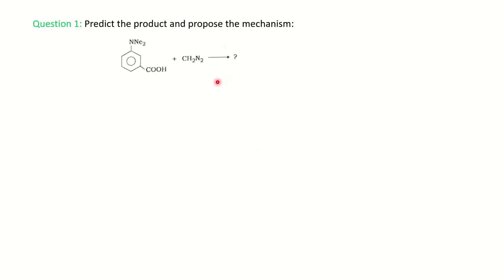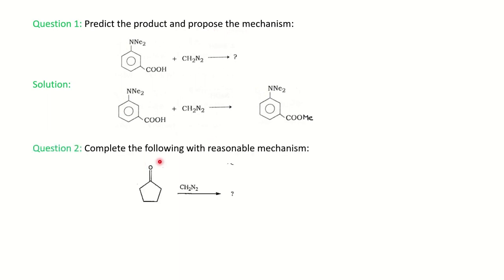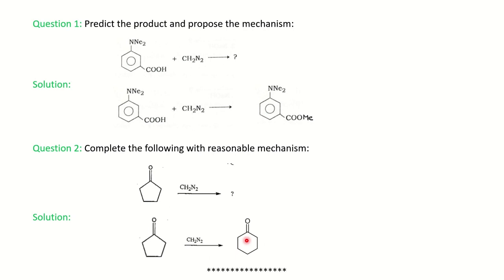We will now see a few questions from previous years' MSc question papers. The first question asks to predict the product and propose a mechanism — diazomethane is given in the presence of an acid functional group, so we know the product is an ester, and we can write the mechanism we have seen. The next question asks to complete the reaction with a reasonable mechanism: cyclohexanone is given in the presence of diazomethane — this is the ring expansion case, so cyclopentanone gains one carbon and converts into cyclohexanone. We have now discussed several applications of diazomethane.